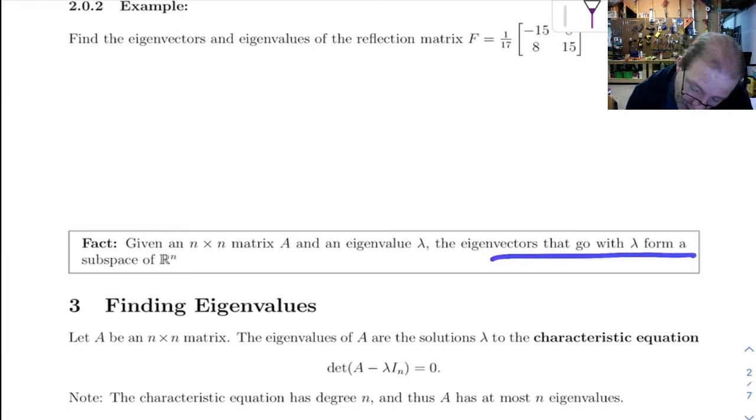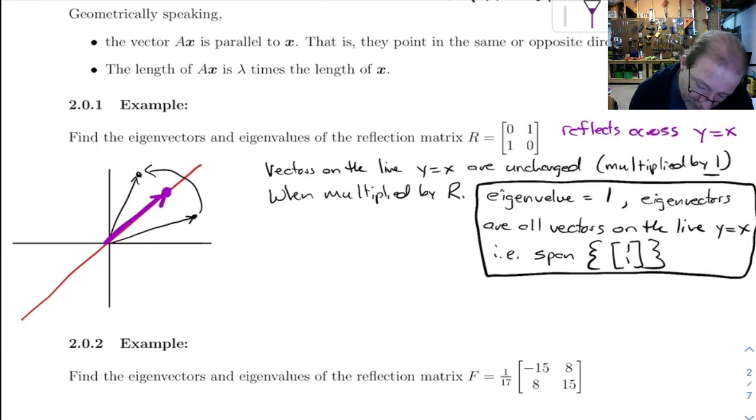The eigenvectors that go with a given eigenvalue lambda form a subspace of R^n. Sure enough, these form a subspace. It's this line through the origin.